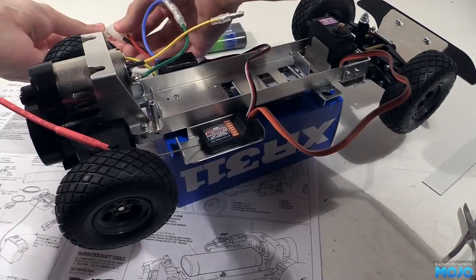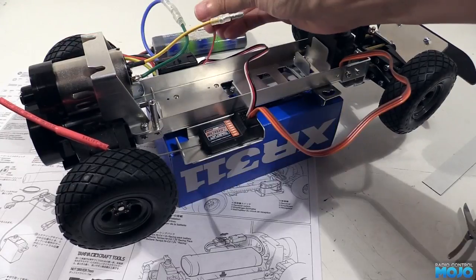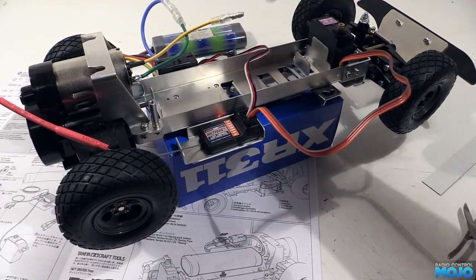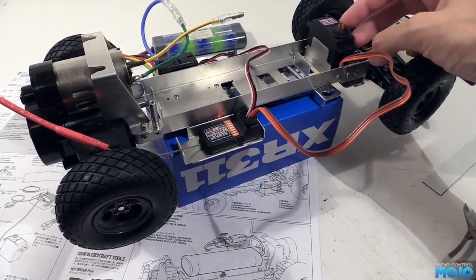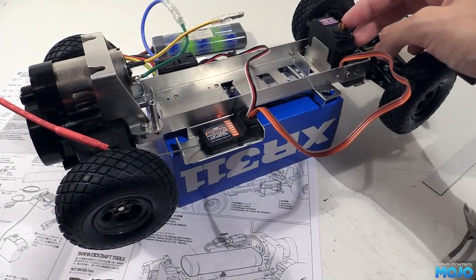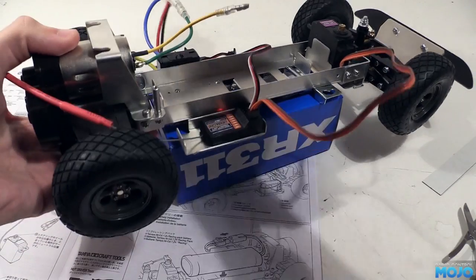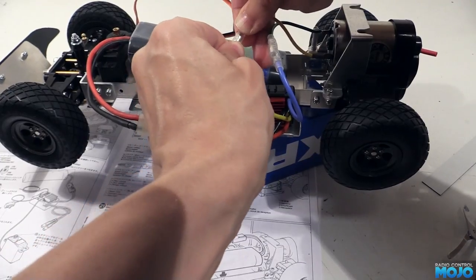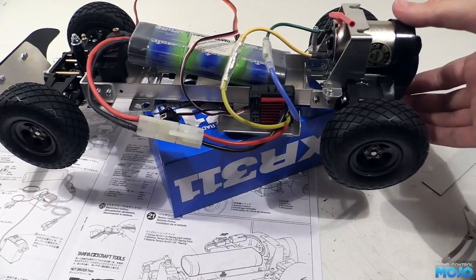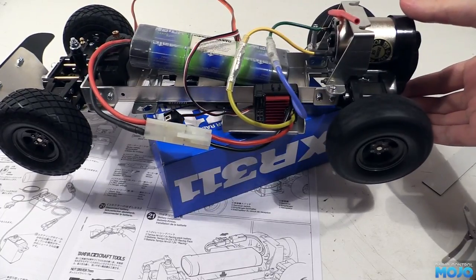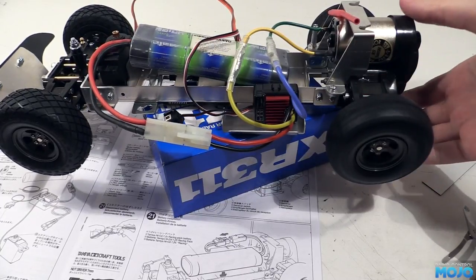Right, the transmitter's already on, so we can plug in the battery and turn it on. Well, the steering servo did something. Seems to be working OK. Now we know the radio's OK, we can plug the other motor wire in and see what happens. Well, it's working, but something's not quite right.